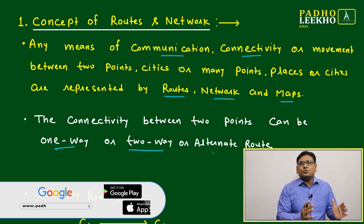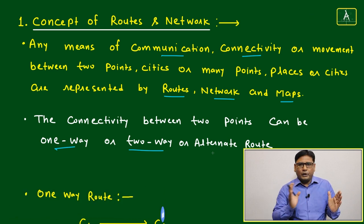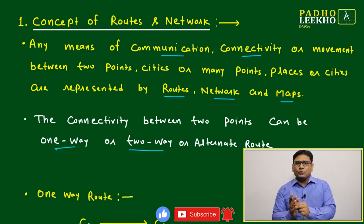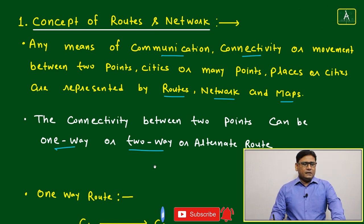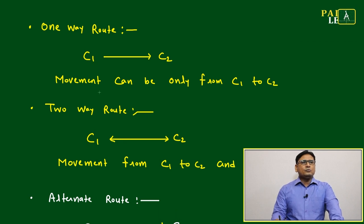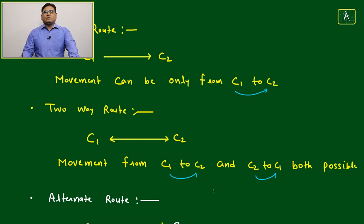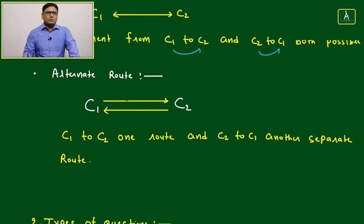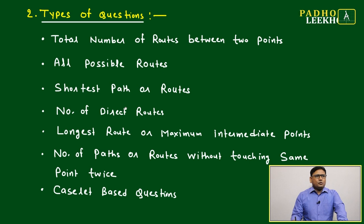You have the option to return, but route will be different. Point 1 to point 2, one route is going, another route is coming back. Just will try to elaborate the same thing. One-way route: movement can be only from C1 to C2. Two-way route: it will be C1 to C2 also and C2 to C1 also, both possibility are open. And alternate route: C1 to C2 also possible by one route, and C2 to C1 also possible by another route. Route will be changed, but you are free to move from both sides.